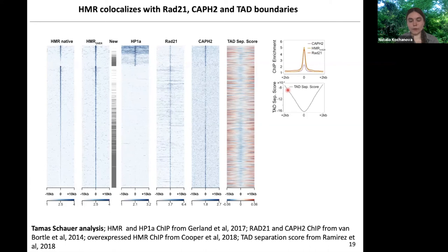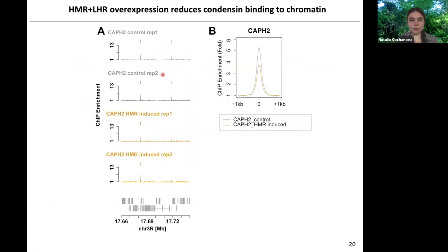So what do we have? HMR has condensin in proximity to it. It colocalizes with condensin on ChIP-sequencing. In hybrids where HMR and LHR are overexpressed, there are possibly problems with chromosomal condensation. We decided to simulate the hybrid situation by overexpressing HMR and LHR in cells and seeing what happens to condensin binding to chromatin. We focused on the CAPH2 subunit of condensin. As you can see from these genome browser track examples, upon HMR overexpression, some condensin peaks stay intact, while at others the CAPH2 signal is reduced, and the overall CAPH2 signal upon HMR overexpression is reduced.